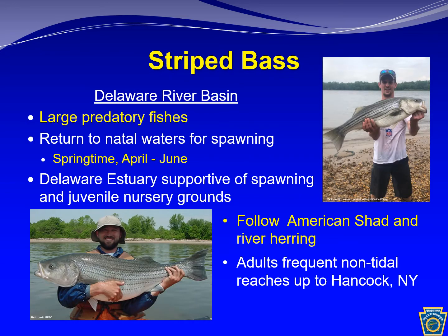Let's turn our attention to three of our popular migratory fishes. Striped bass is a large predatory fish, returning each spring, April through June, from the ocean for spawning, principally in the upper Delaware Estuary freshwater reaches. They generally are following the shad and river herring, which serve as a food source for striped bass.